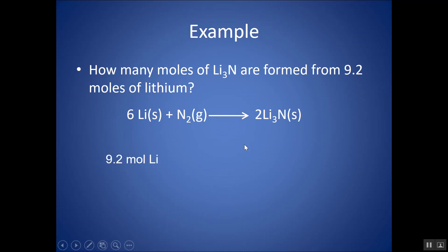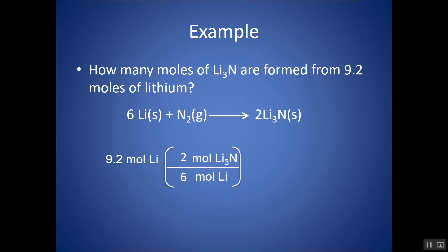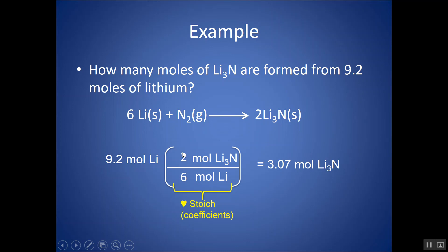Take one more moment and try this example. Start with 9.2 moles — be very specific — moles of lithium, Li. I want to change it into moles of Li3N. So I want a conversion factor that has moles of Li on the bottom and moles of Li3N on top. I relate moles of one thing to moles of another using the coefficients of the reaction — this is stoichiometry. Li has a coefficient of 6, so that goes on the bottom. Li3N, lithium nitride, has a coefficient of 2. Moles of Li will cancel out and I'll end up with moles of lithium nitride.